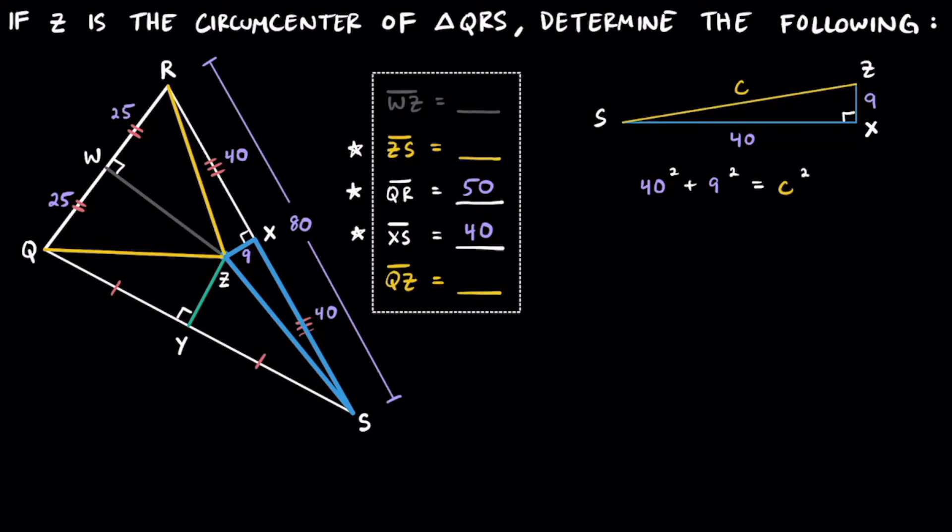If we go ahead and square that 40, 40 times 40, that's going to be 1600. And then if we go ahead and square that 9, that's going to be 81, so we can go ahead and write 81 here, and then C squared, we still don't know, so we're going to just go ahead and write C squared.